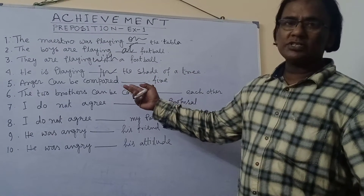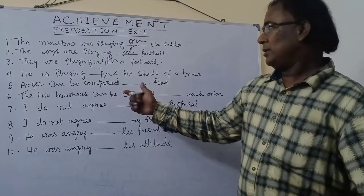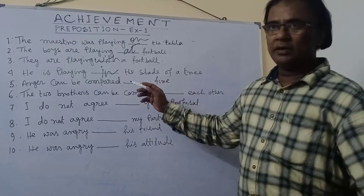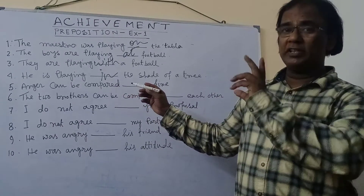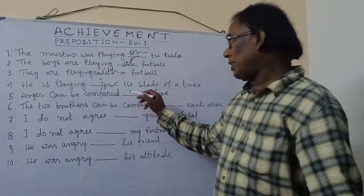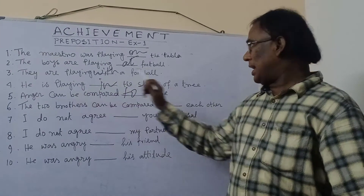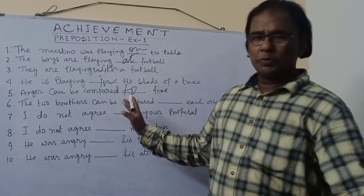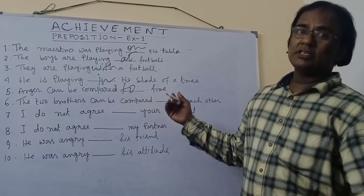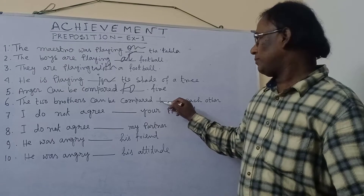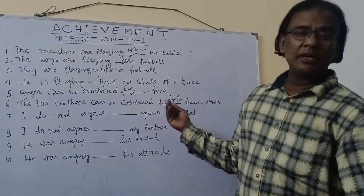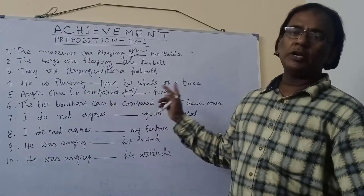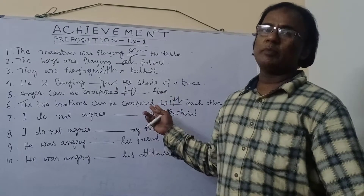Numbers 5 and 6 deal with the same word — 'compare.' Number 5: 'Anger can be compared to fire.' We are comparing two different things, grammatically two different things — anger and fire. Therefore the answer will be 'to.' Number 6: 'The two brothers can be compared with each other.' The two brothers are similar persons, so we have to use 'with.' I hope you understand the rationale: when comparing different things, use 'to'; when comparing similar things, use 'with.'